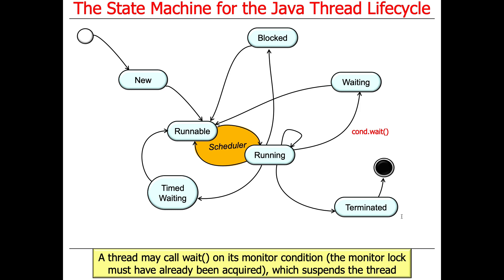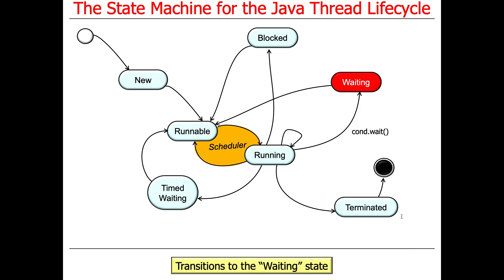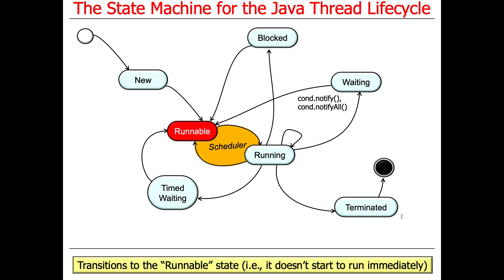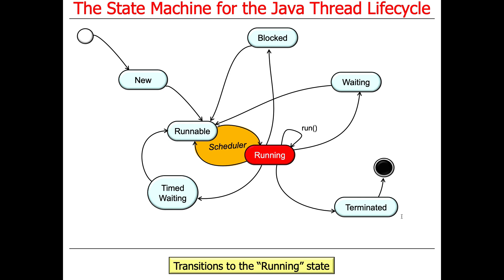You might also call the non-timed wait operation on a monitor. The thread can call wait on its own monitor condition, which implies the monitor lock must have already been acquired — you can't legally call wait without already holding the lock, otherwise you'll get an IllegalStateException. At this point, you transition to the WAITING state, where you're blocked waiting for someone to signal you. When another thread calls notify or notifyAll, you wake up from waiting — possibly transitioning briefly through BLOCKED to acquire the lock — and eventually transition back to RUNNABLE and then RUNNING.